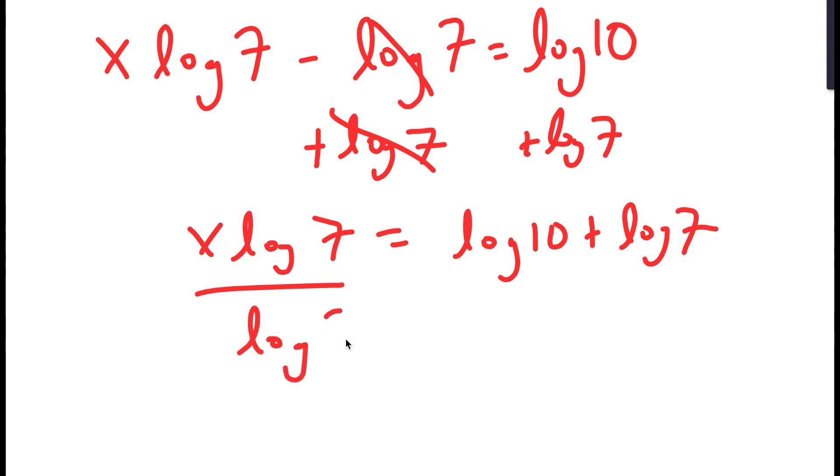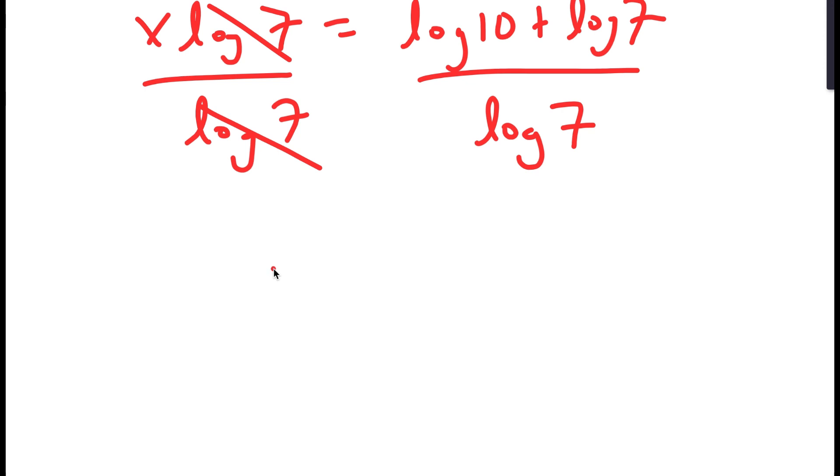Now, finally, I'm going to divide both sides by log 7. So these two cancel out. And I get x is equal to 1 plus log 7 over log 7, because log 10 is equal to 1.